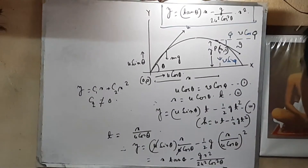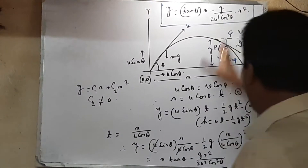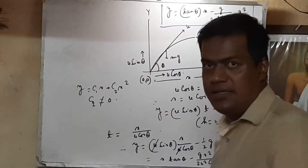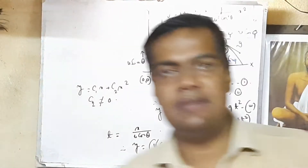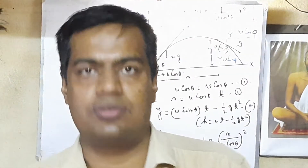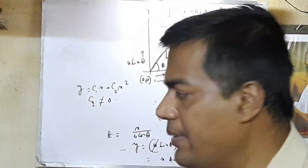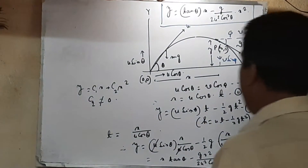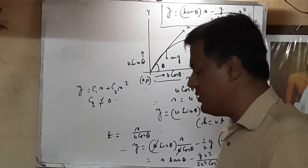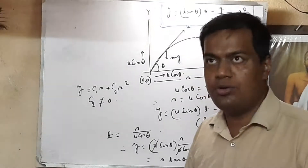The same equation can also be derived using calculus. Before proceeding that way, let us find an expression for the instantaneous velocity v, which is the velocity of the projectile at some arbitrary point P with coordinates (x, y).